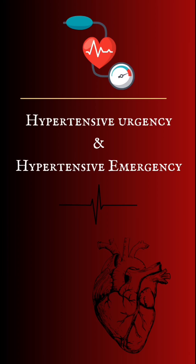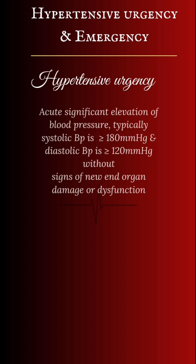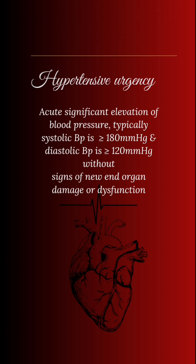Let's talk about hypertensive urgency and hypertensive emergency. Hypertensive urgency is the acute significant elevation of blood pressure — typically systolic blood pressure more than or equal to 180 mmHg and diastolic blood pressure more than or equal to 120 mmHg — without signs of end organ damage. That is hypertensive urgency.